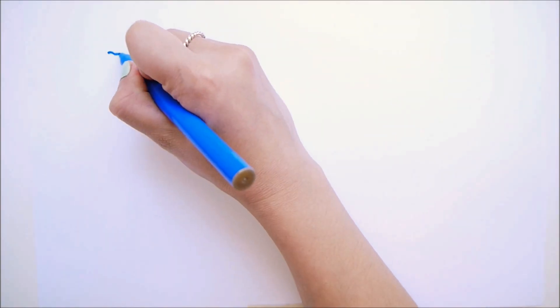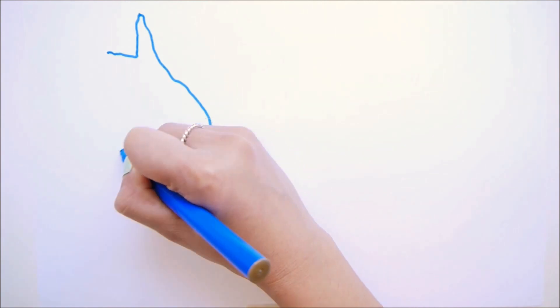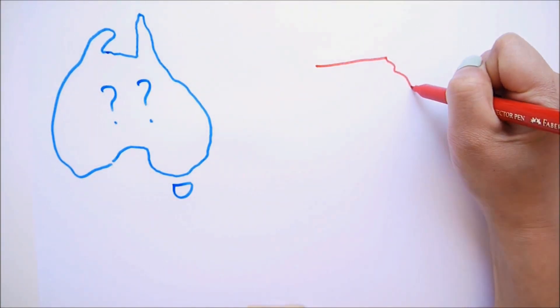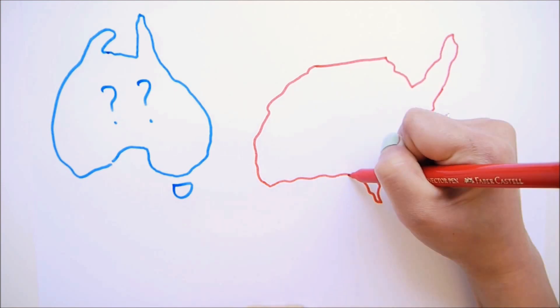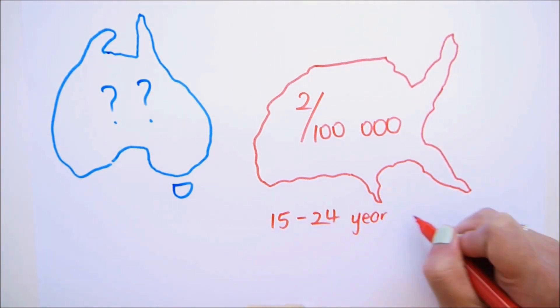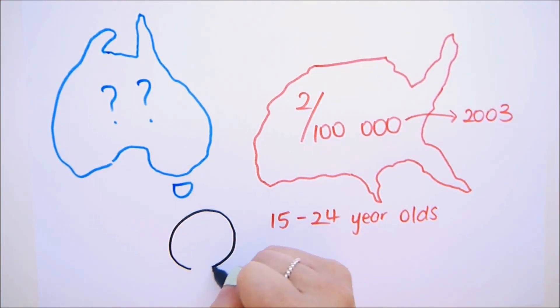Before we go any further, TSS is super rare. It's so rare in Australia that there are no reliable figures on it, but in the US, about 2 out of 100,000 women aged between 15 and 24 were reported in 2003. But if you get it, it's serious and can lead to some really terrible complications.